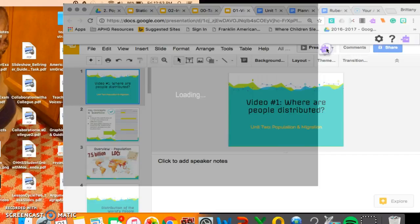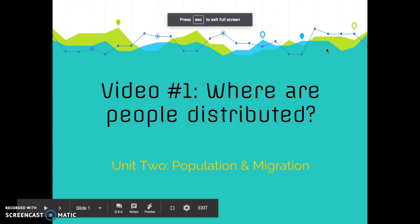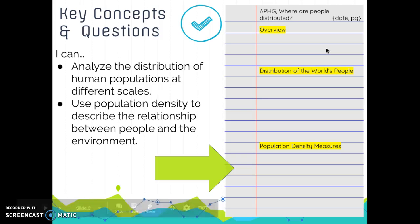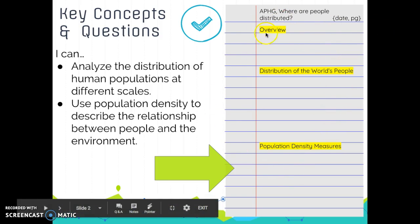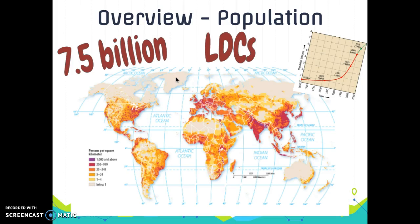Hello folks, we are talking about where people are distributed. This is your first video for Unit 2. You should take a second to set up your notes. It's important to know right off the bat that humans are not distributed uniformly across the earth — there is no even distribution of people. We see them highly clustered in particular places.